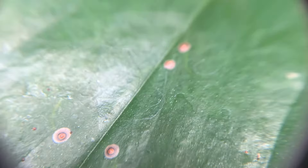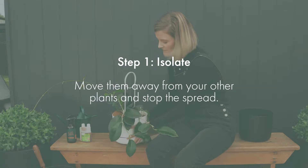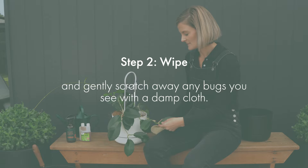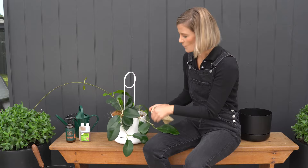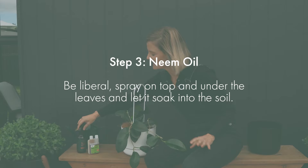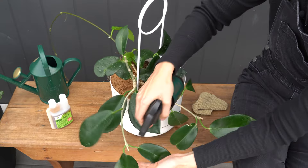Wiping or gently scratching off the pests as soon as you spot them is really the first step to treatment. When it comes to houseplant pests it's always best to act sooner rather than later. First, you're going to need to isolate the plant and get them away from spreading to all your other plants inside your home. Secondly, we're going to wipe and remove those bugs away from those crevices. Step three, we're going to use a pre-made neem oil and be pretty liberal with this one — spray all the leaves and also let it soak down deep into the soil.